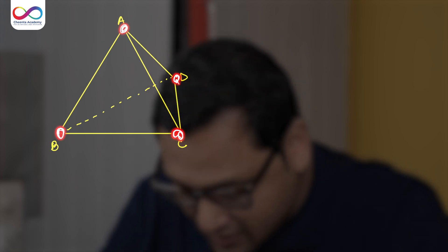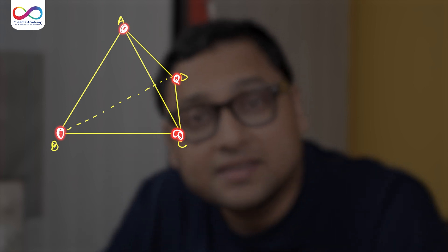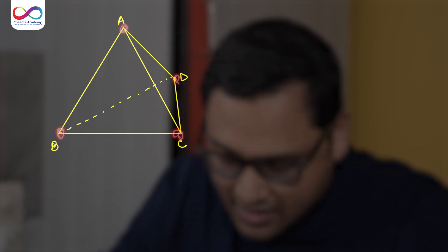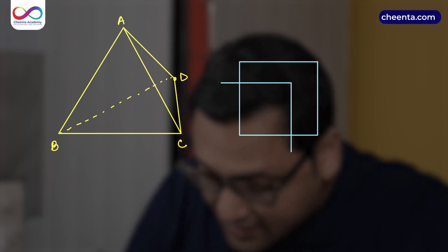Suppose you have a polyhedra. In this case, I have drawn a tetrahedron. If I draw another polyhedra, let's say I draw a cube. It's also a three-dimensional solid. In fact, it is a convex solid.